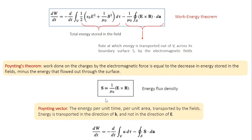There is another important inference here: the direction of energy flow. The direction is given by E cross B. In the last class, when we discussed the geometrical aspects of electromagnetic waves, we said there are three important vectors: the electric field vector E, the magnetic field vector B, and the propagation vector K. These three vectors form a right-hand system, meaning the cross product of two gives the direction of the third. So E cross B gives the direction of K, meaning the Poynting vector points in the direction of propagation.